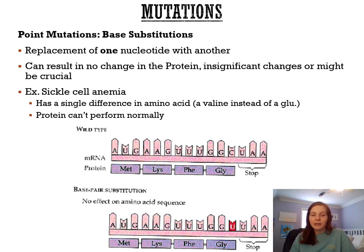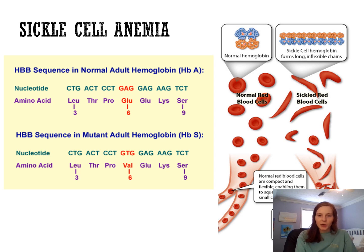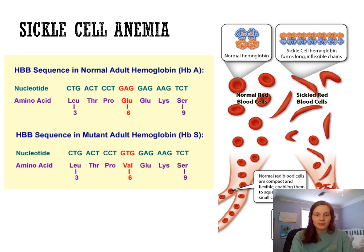That one single amino acid change in sickle cell anemia makes the protein not fold correctly, and that protein is used in hemoglobin (red blood cells). The original codon in normal adult hemoglobin is GAG (coding for glutamate), but the mutation changes that A to a T, giving us a different codon — and if you have that mutation, you have sickle cell.